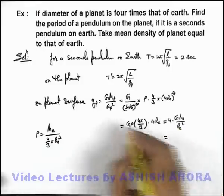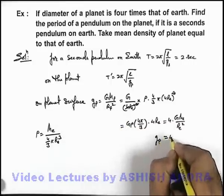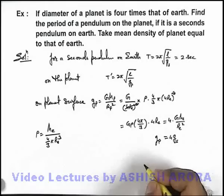Thus we can write that gravity on the surface of planet is 4 times that of the gravity on surface of Earth.